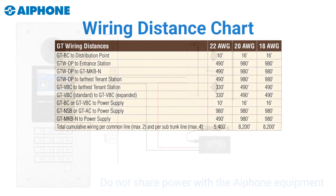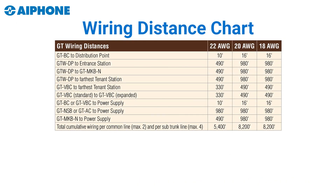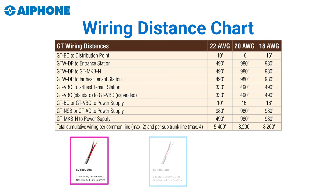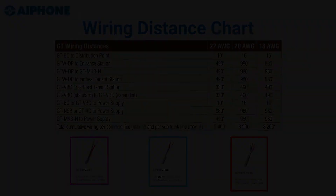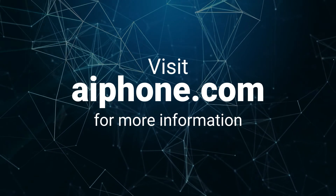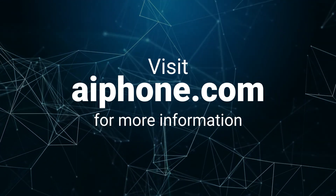When designing your system, keep an eye on the wiring distance chart to decide where to place your components, and stay within the distance ranges shown. When installing an A phone system, using A phone wire will add an extra one-year warranty to your system. I hope you found this video helpful. If you need more resources, please visit the A phone website. Thank you.